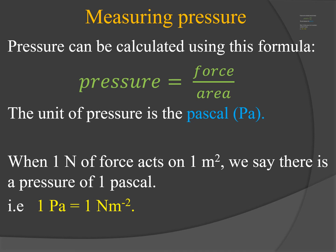Pascal is the name of a scientist. The definition of Pascal is: when one newton of force acts on an area of one meter square, we say there is a pressure of one Pascal. That is, one Pascal is equal to one newton per meter square.